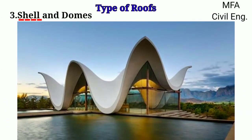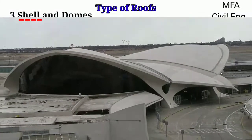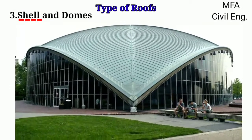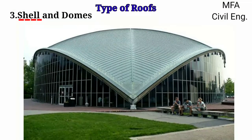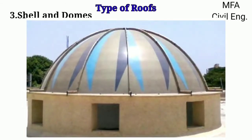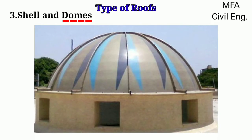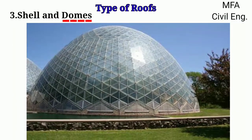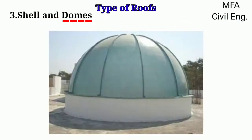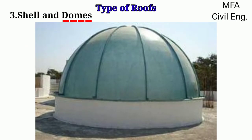Shell roofs are used for covering large single-storey structures like assembly halls, theatres and factories. Shells have the advantage of covering a large area without obstructions such as columns. Domes are also used for covering large areas like assembly halls and gymnasiums, but they are semi-spherical or semi-elliptical in shape.